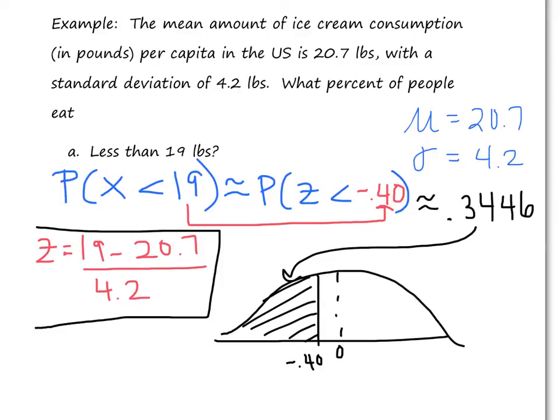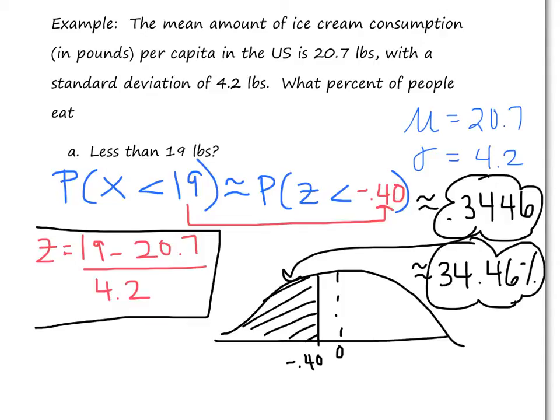So we're really saying, in the beginning they wanted to know it as a percentage. If I just wanted a probability, well, I'd be done here. But since they asked me for a percent, that means it's about 34.46% of people would eat less than 19 pounds of ice cream. So we're just going to keep doing this. The next few parts of this are just doing this same kind of thing over and over.